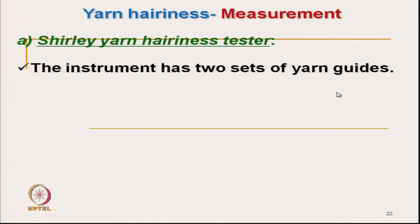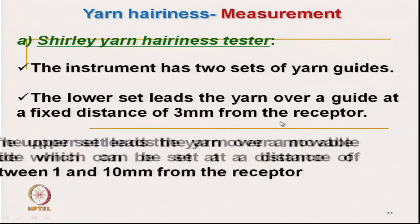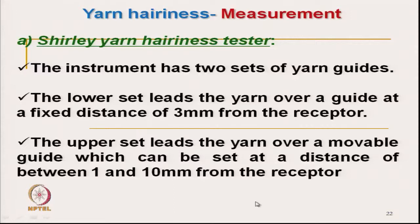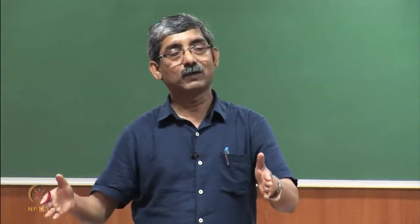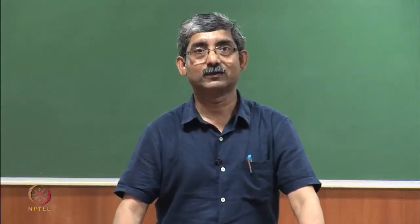The instrument has 2 sets of yarn guides: the lower guide gives a fixed length of 3 mm and the upper guide gives a variable set of lengths. The total number of hairs in a fixed length can be counted, and if we know the speed of the yarn, we can convert it to the number of hairs per unit length.